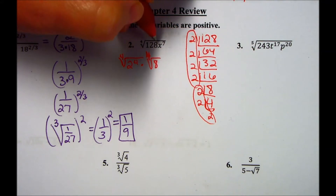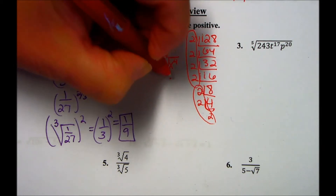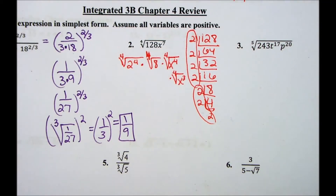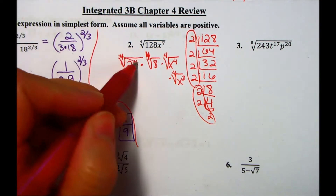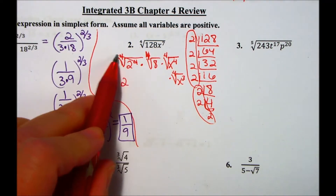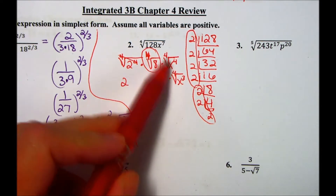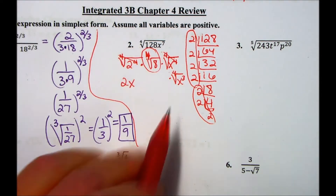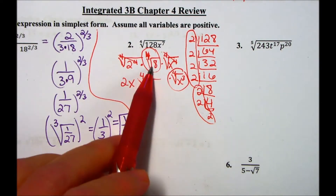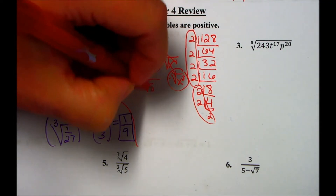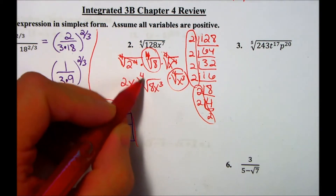For the variable, I can separate into the 4th root of x to the 4th times the 4th root of x to the 3rd. The 4th root of 2 to the 4th reduces to give me 2 — that's a perfect 4th power, so it gets to go outside. The 8 is not a perfect 4th power, so it stays under the radical. The x to the 4th is a perfect 4th power, so it goes outside. But x to the 3rd is not, so it also stays under the radical.